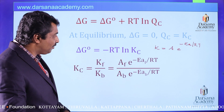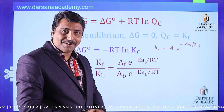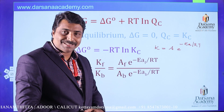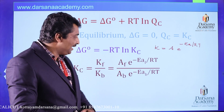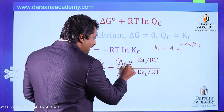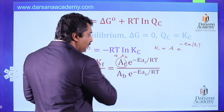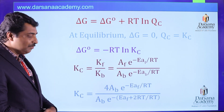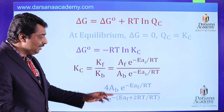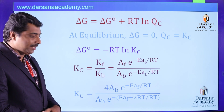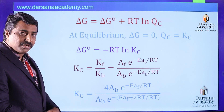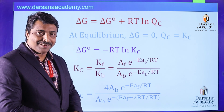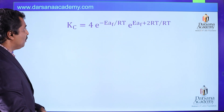Since EAB exceeds EAF by 2RT, we substitute EAB as EAF plus 2RT. Also, since the Arrhenius constant for the forward reaction is four times that of the backward reaction, AF equals 4 times AB. Therefore KC equals 4 times AB times e raised to minus EAF divided by RT, all divided by AB times e raised to minus (EAF plus 2RT) divided by RT.